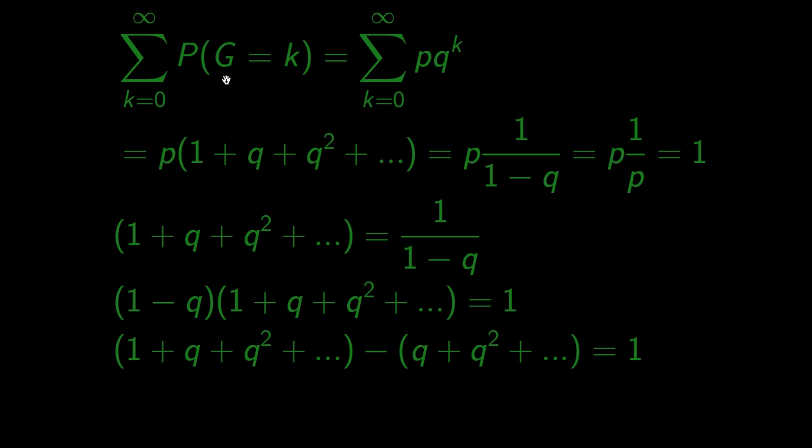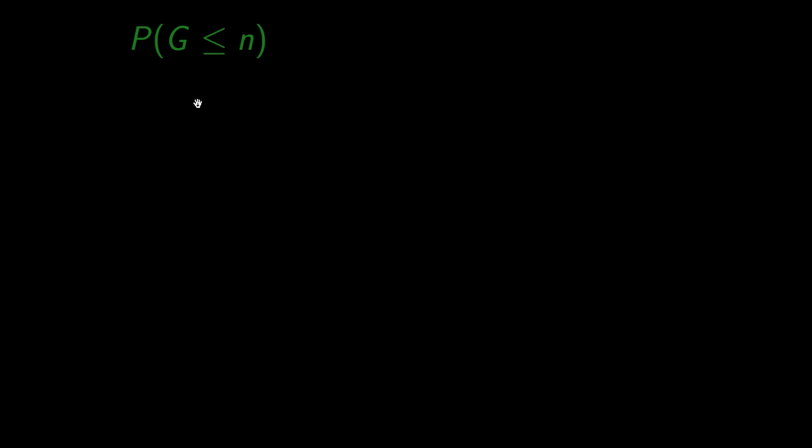The sum of probabilities of all possible events is equal to 1. Let us calculate one more thing. What is the probability of succeeding at most after n trials? Well, this is the same as 1 minus the probability of not succeeding after n trials.